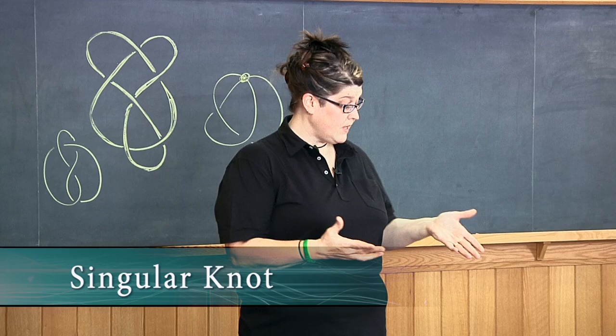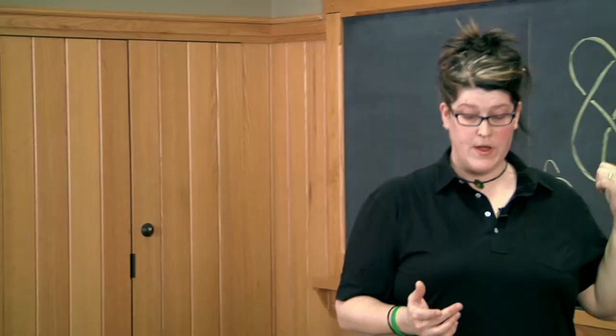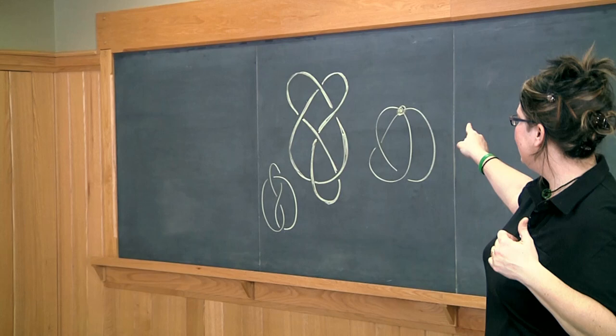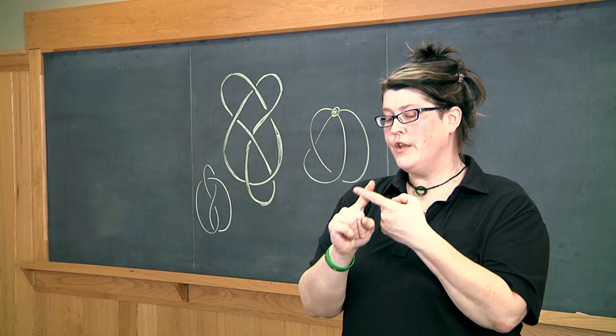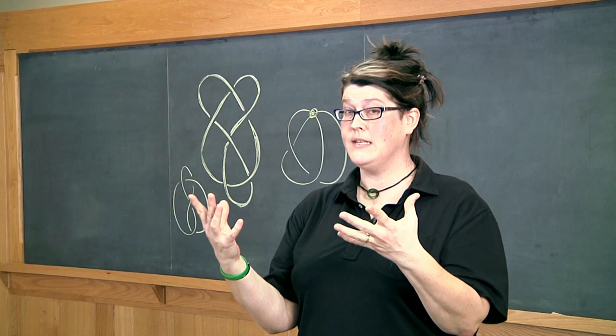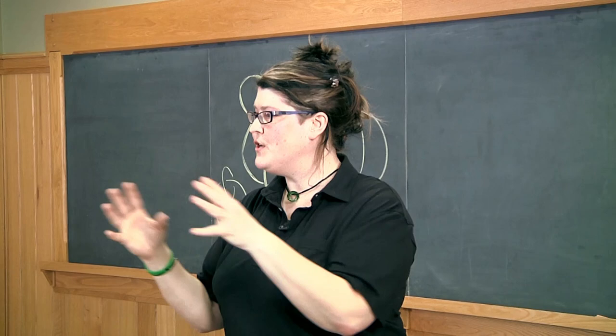Another example is singular knots. You may have noticed that one of the knots behind me has a big dot on it. It has a singularity where the two strands have been fused together. Singular knots are used a lot in papers about their connections to Vasiliev invariants and all kinds of fancy things. But my students and I realized that there was no table of singular knots, no list of them.